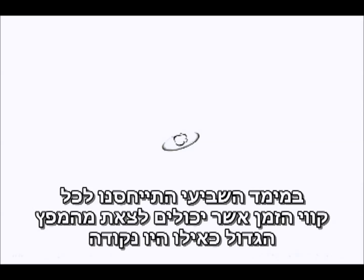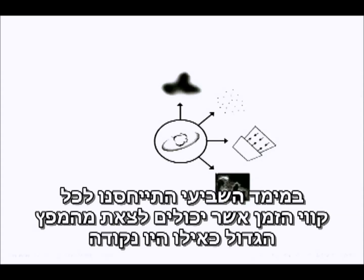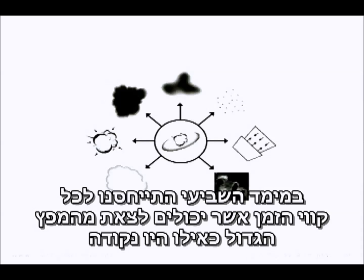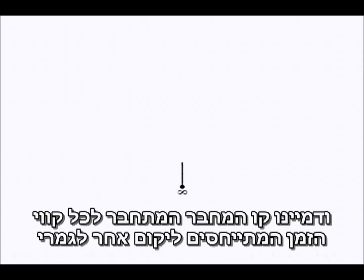In the seventh dimension, we treated all of the possible timelines which could be generated from our Big Bang as if this were a single point, and imagined drawing a line to a point representing all the possible timelines for a completely different universe.